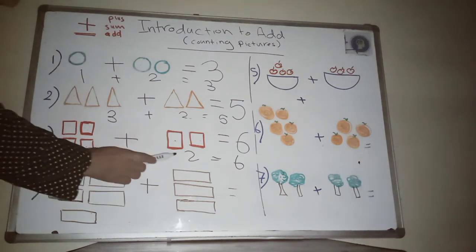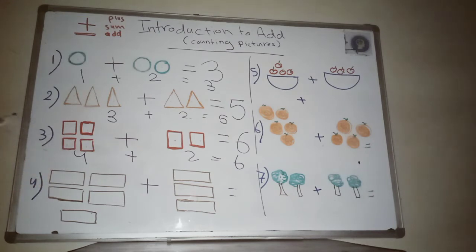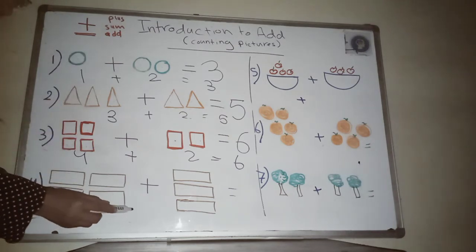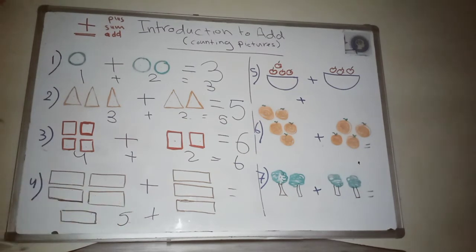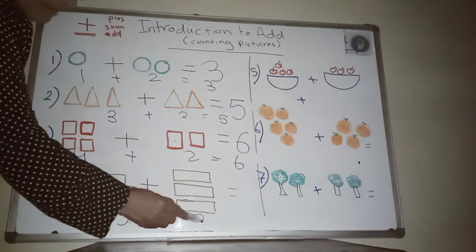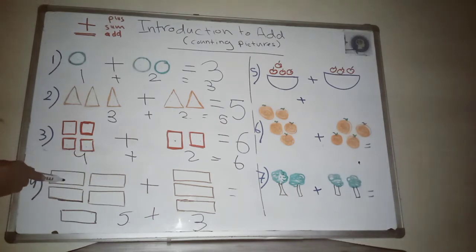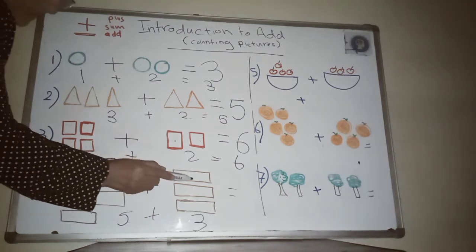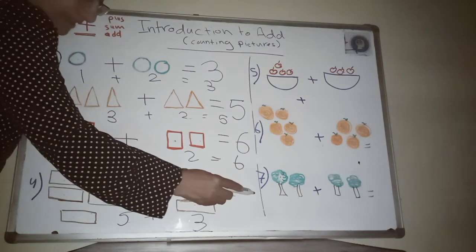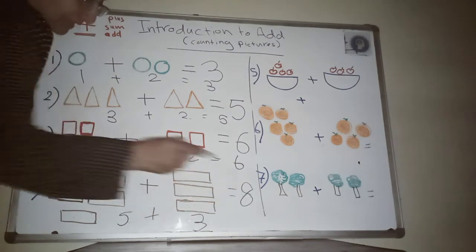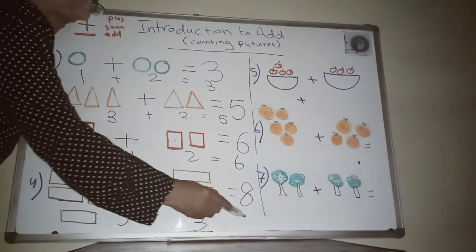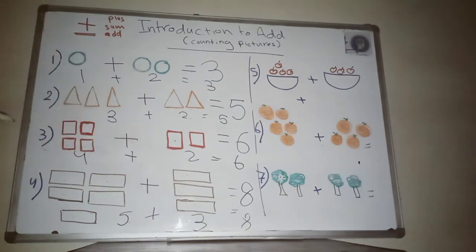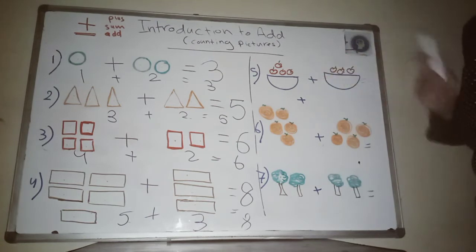Another example: I have five rectangles and three more rectangles. How many rectangles do we have? Let's count — one, two, three, four, five, six, seven, eight. I have eight rectangles. So five plus three equals eight.